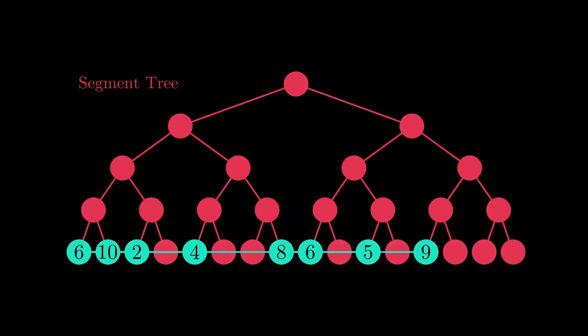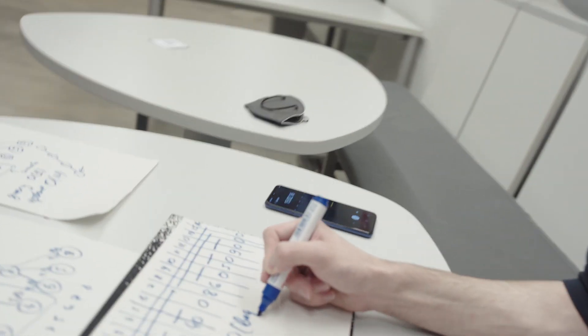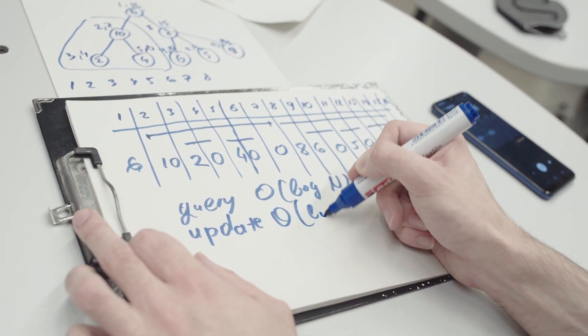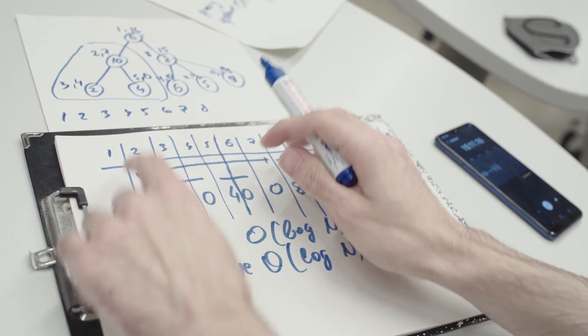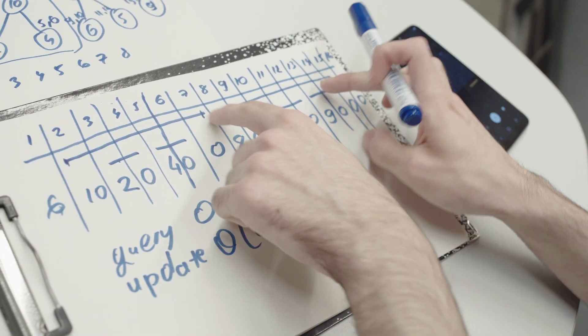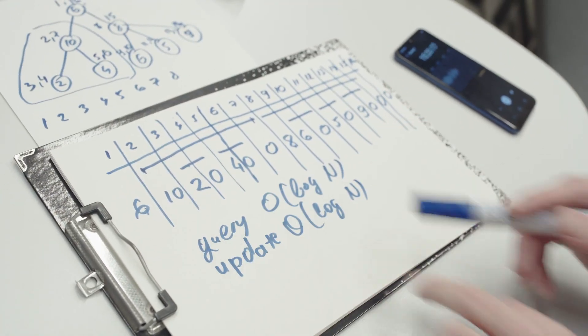Not only can we query in logarithmic time, we can also update in logarithmic time. There's no O(n) anymore — query is O(log n) and update is O(log n) because in the segment tree we can find sums or update any node in logarithmic time.